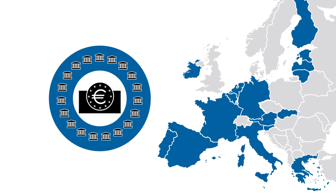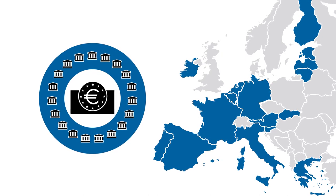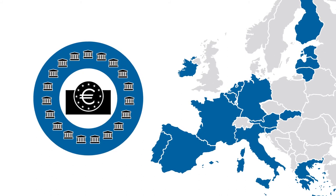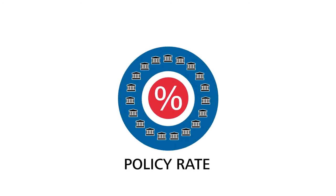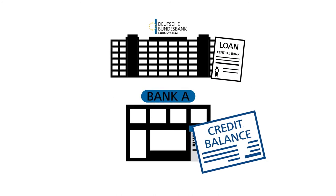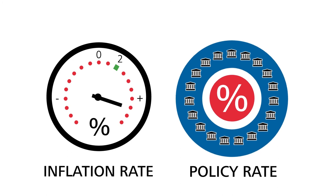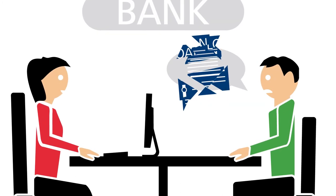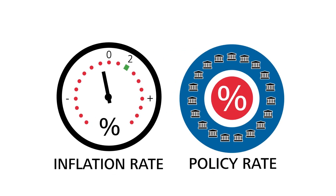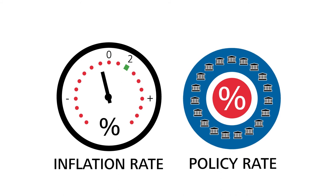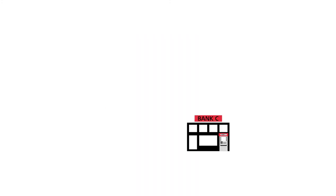Central banks also exert influence on the creation of book money through their monetary policy. In the Euro area, these are the European Central Bank and the national central banks of the Euro-area countries — in Germany, the Deutsche Bundesbank. An important monetary policy instrument is the policy rate, applied throughout the Euro area: the rate of interest that banks have to pay to the central bank on their loans. If inflation is looming, the central bank raises the policy rate; interest rates on loans then go up, scaring off many customers, so banks grant fewer loans and less book money is created. If there is a risk of deflation, the central bank lowers the policy rate; interest rates on loans generally go down, encouraging customers to borrow, and more book money is created.